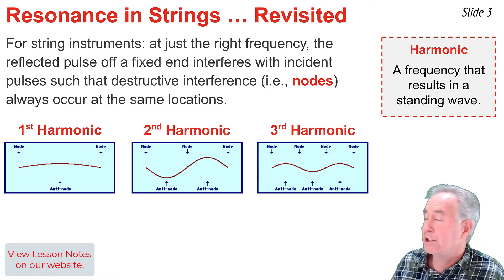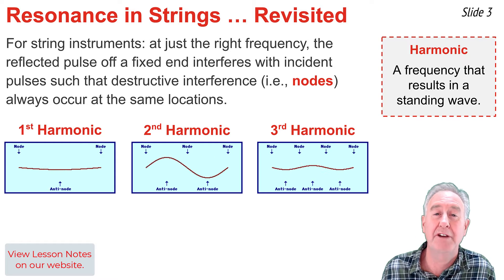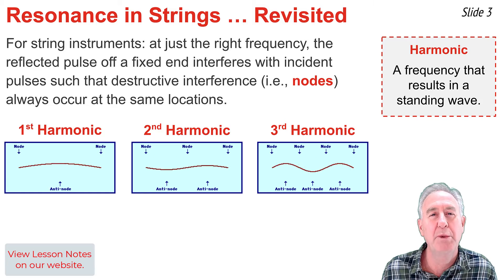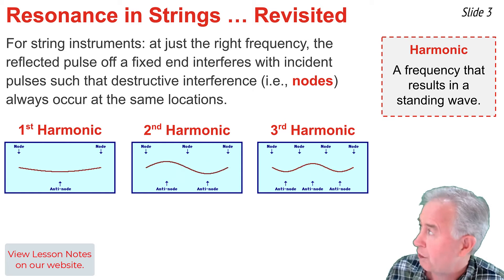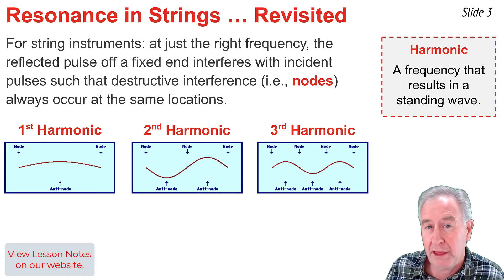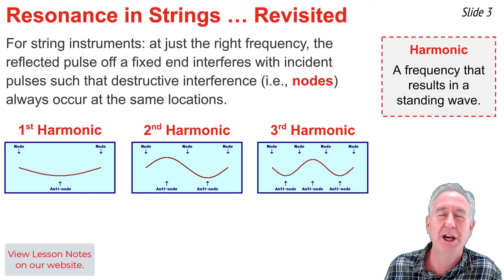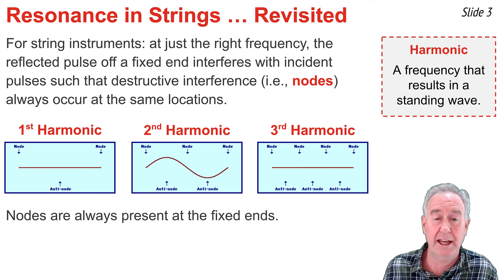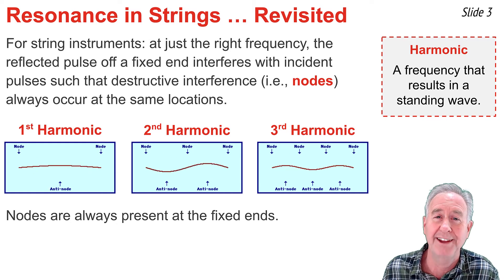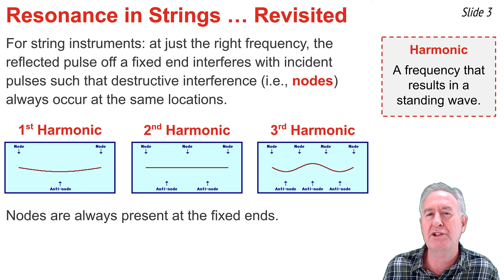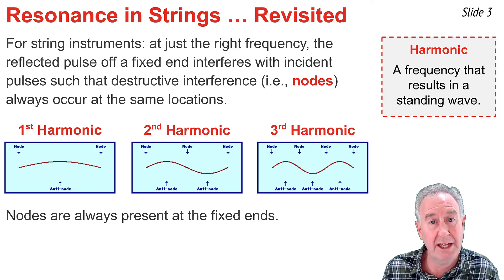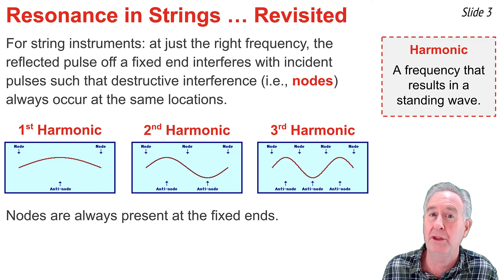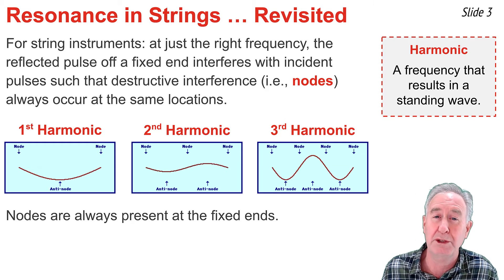These three animations display the vibrational pattern of the lowest three frequency harmonics of a vibrating string — the first harmonic, the second harmonic, and the third harmonic. You'll notice in each of the patterns that there is a node located at both ends of the string. There are nodes there because the string is fixed in place at its ends and unable to vibrate up and down, thus forming a node — a point of no displacement.